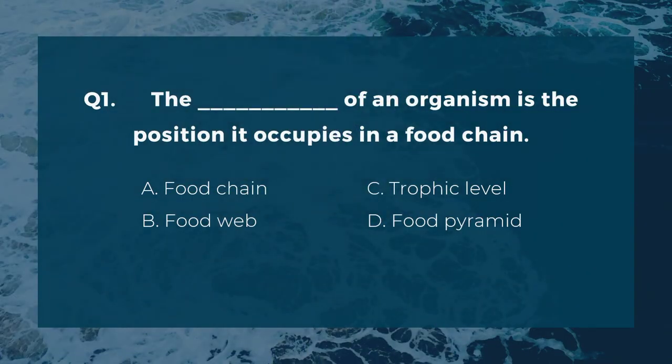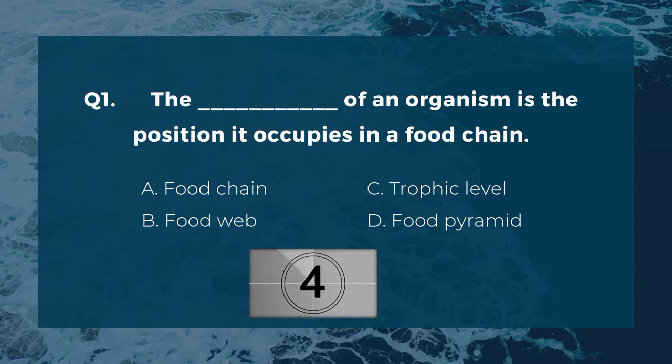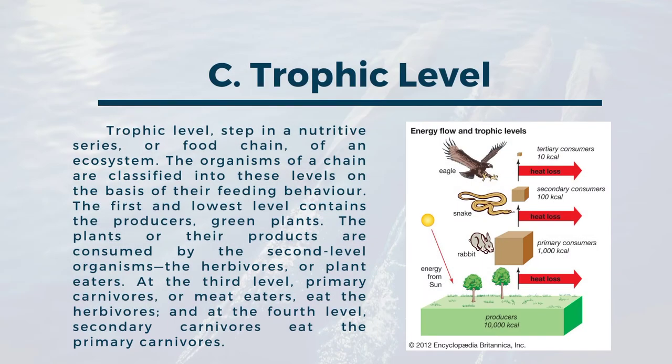Question number one: the blank of an organism is the position it occupies in a food chain. A) food chain, B) food web, C) trophic level, D) food pyramid. The correct answer is C, trophic level. Trophic level is a step in a nutritive series or food chain of an ecosystem. Organisms of a chain are classified into these levels on the basis of their feeding behavior.